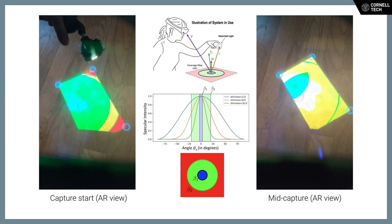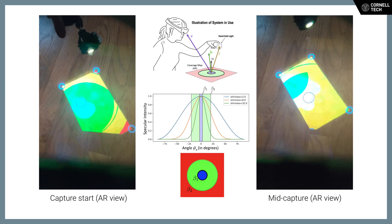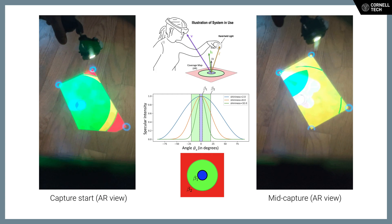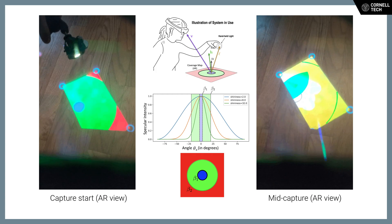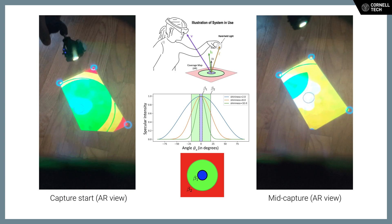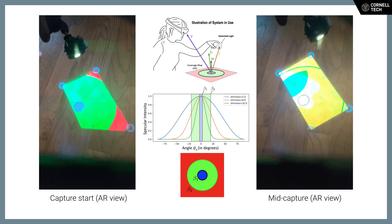If the user paints the entire coverage map white, then every point on the target surface will have been captured under illumination conditions that fall into each of the three regions.